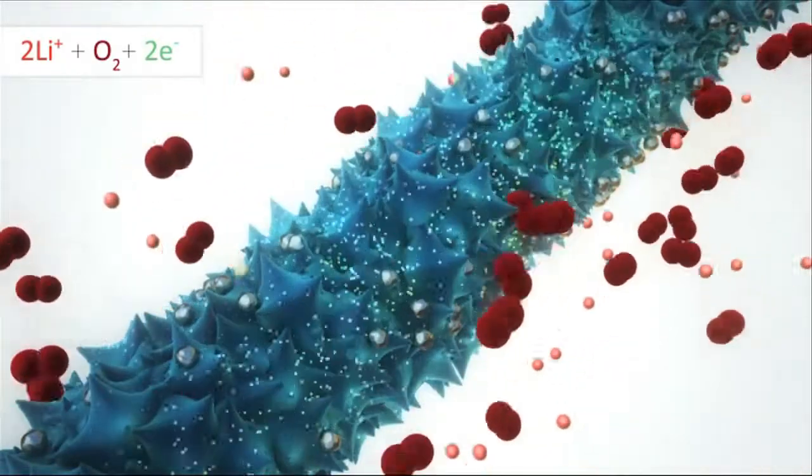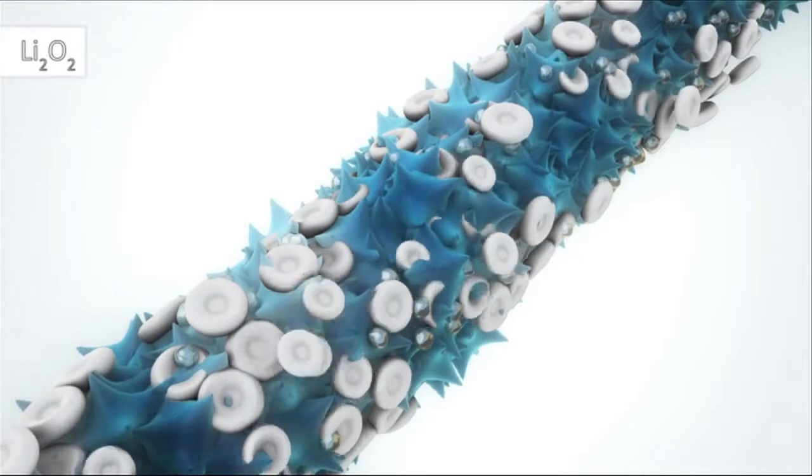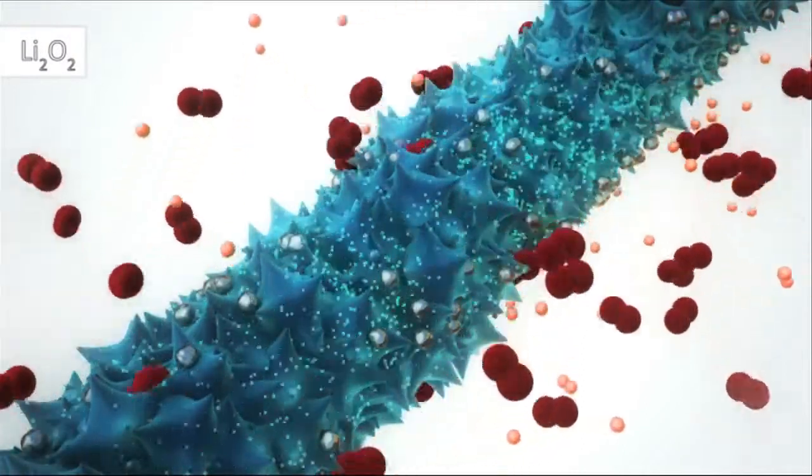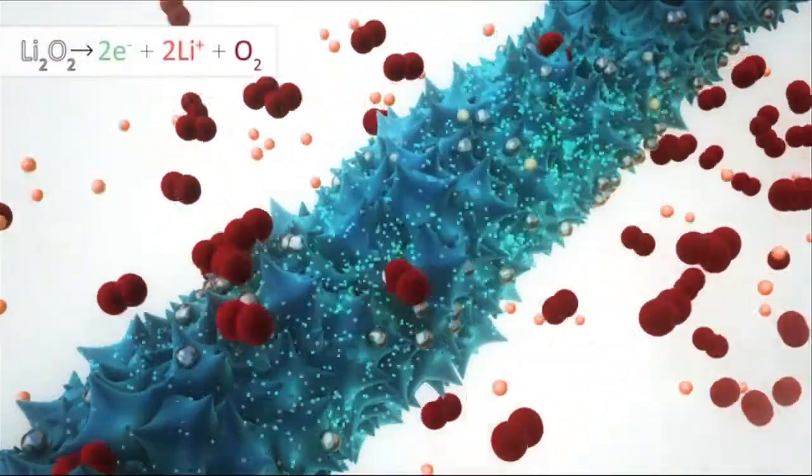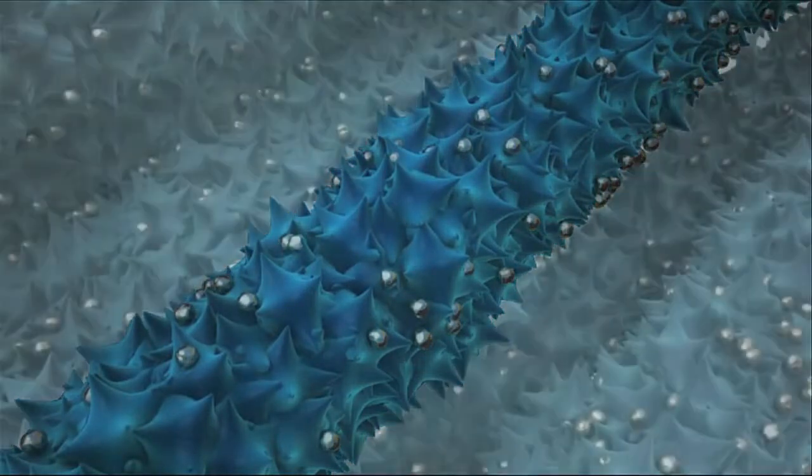These battery electrodes interact with lithium and oxygen and electrons to form lithium peroxide. This is a reversible reaction where the lithium peroxide forms back into its components to complete the cycle.